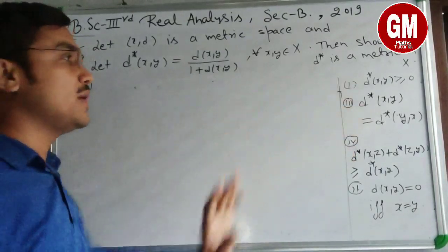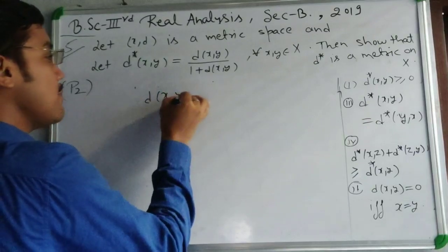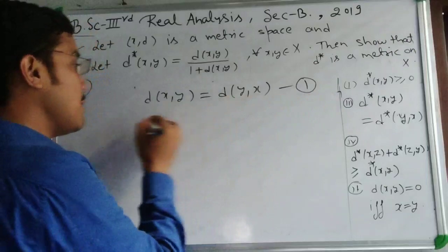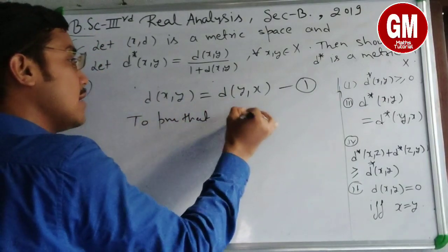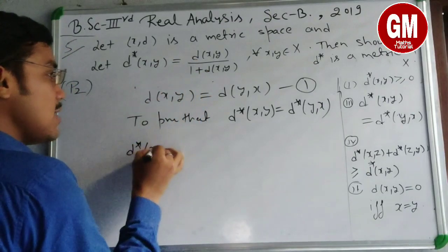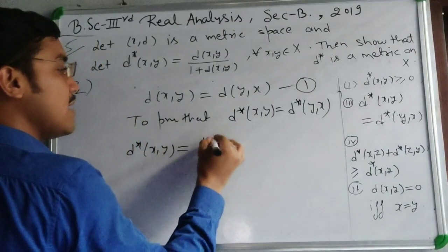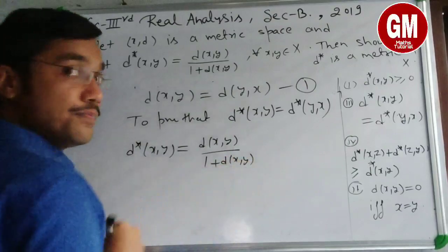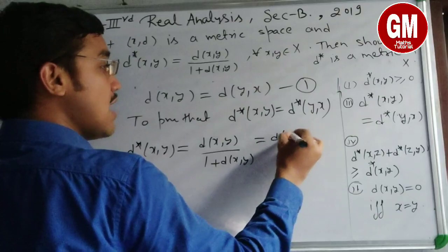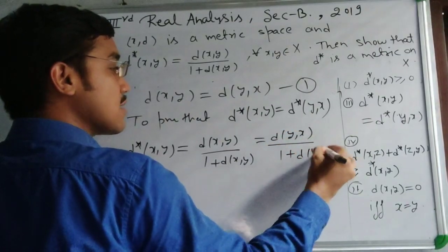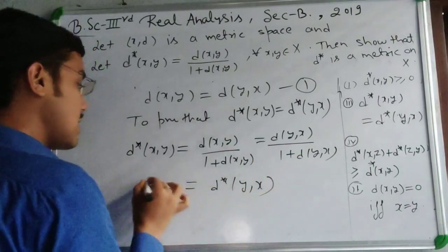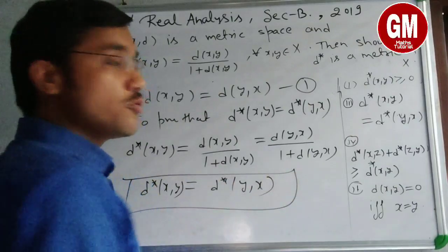Property 2 (symmetry): Since d(x,y) = d(y,x) (d is a metric), substituting in d*(x,y) = d(x,y)/(1+d(x,y)) gives d*(x,y) = d(y,x)/(1+d(y,x)) = d*(y,x)। Thus symmetric property is proved।